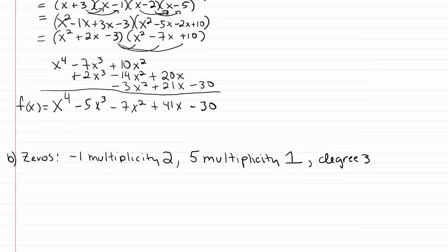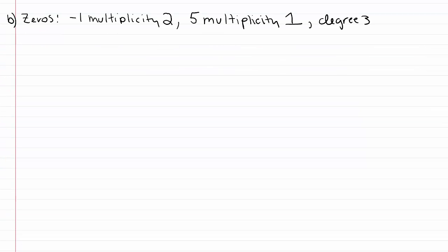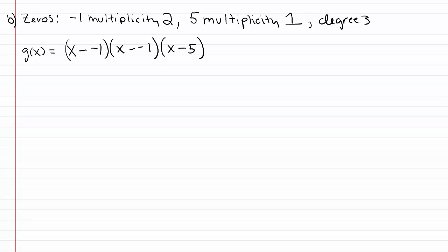Let's take a look at part b. Example b is very much like example a, except that they tell us the zeros have certain multiplicities. Multiplicity just means how often the zero is repeated: write it down twice if it has multiplicity two, once if it has multiplicity one. The function g of x would be x minus negative one times x minus negative one — written twice because negative one has multiplicity two — times x minus five with multiplicity one. The overall function should have degree three.